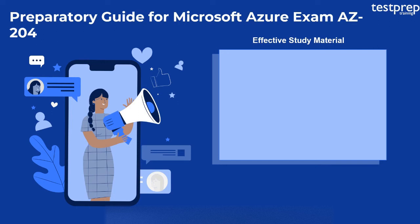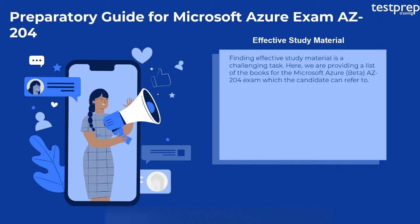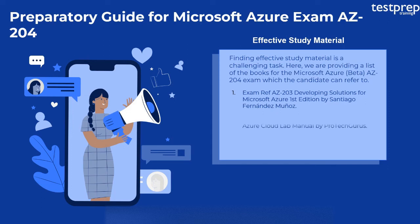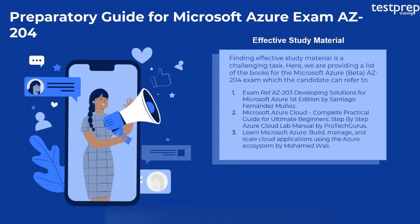Second, effective study material. Finding effective study material is a challenging task. Here we are providing a list of books for the Microsoft Azure Beta AZ-204 exam which the candidate can refer to: First, Exam Ref AZ-203 Developing Solutions for Microsoft Azure, First Edition by Santiago Fernandez Muñoz. Second, Microsoft Azure Cloud: Complete Practical Guide for Ultimate Beginners, Step-by-Step Azure Cloud Lab Manual by ProTech Gurus. Third, Learn Microsoft Azure: Build, Manage, and Scale Cloud Applications Using the Azure Ecosystem by Muhammad Wali.